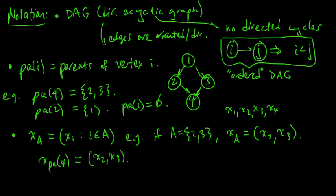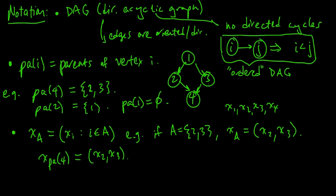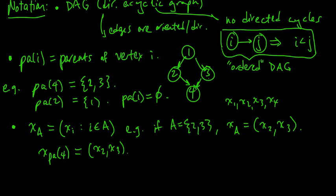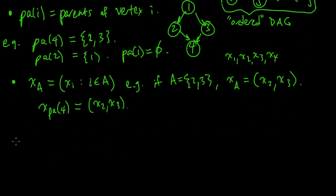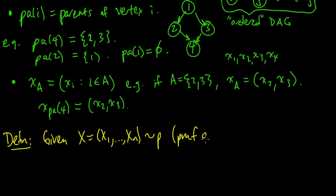Okay, now that we have those notational conventions all set, we are ready for the definition. Definition. Given a vector x of random variables, x1 up to xn, distributed according to some probability distribution p, and let's assume that this is either a PMF or a PDF,